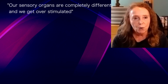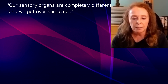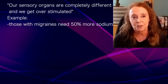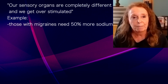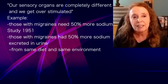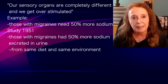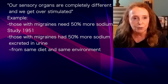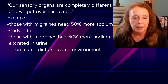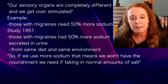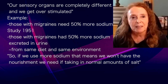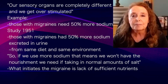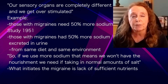Our sensory organs are completely different and we get overstimulated. Comparing sodium usage between a migraineur's brain and a non-migraineur's brain, a migraineur needs about 50% more sodium. A 1951 study examined migraineurs' urine sodium output and found they were excreting 50% more sodium from the same diet under controlled conditions. So migraineurs use — and therefore excrete — 50% more sodium. If we use more sodium than someone without migraines, the brain and body are missing nourishment, and that deficiency is what initially starts the migraine.